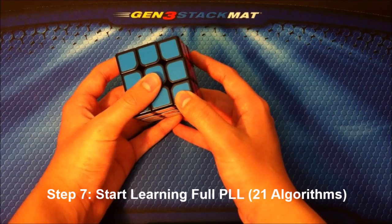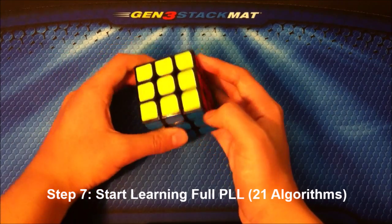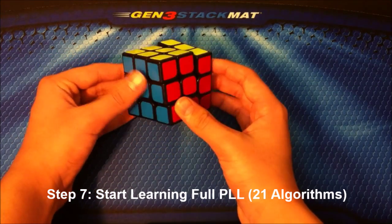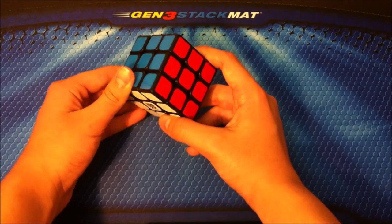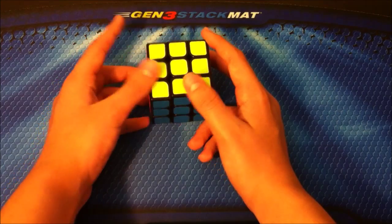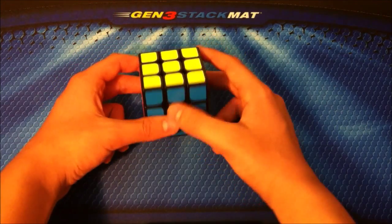Step seven: start learning full PLL. Although this isn't required to get sub-30—like I was sub-30 without this—it helps a lot. I personally have 10 PLLs learned. I need to learn 11 more since there's 21 PLLs you need to learn.